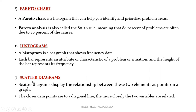The fifth is the Pareto chart. A Pareto chart is a histogram that can help you identify and prioritize problems to be solved. Pareto analysis is also called the 80-20 rule, meaning 80% of the problems are often due to 20% of the causes. The sixth is the histogram. A histogram is a bar graph that shows frequency data, where each bar represents an attribute or characteristic of the problem or situation, and the height of the bar represents its frequency.